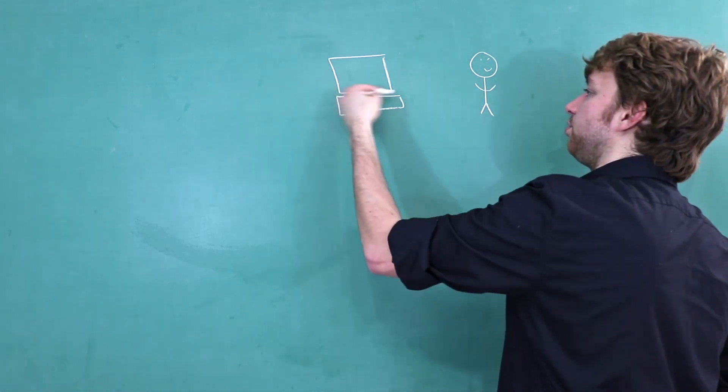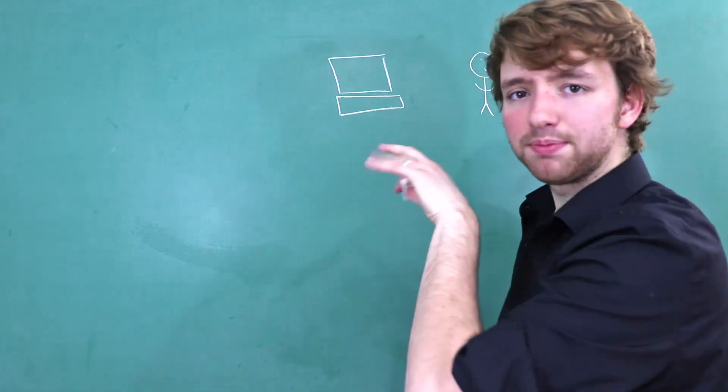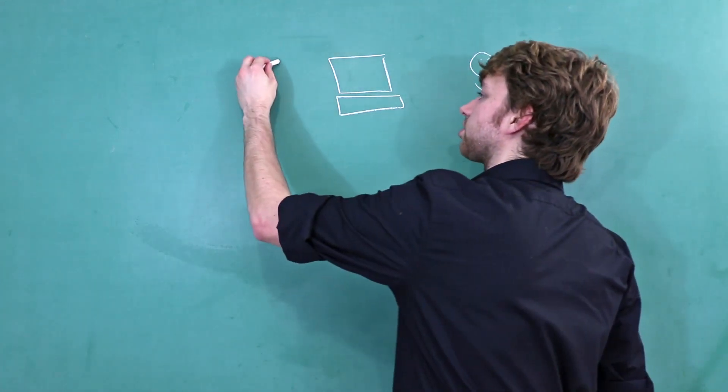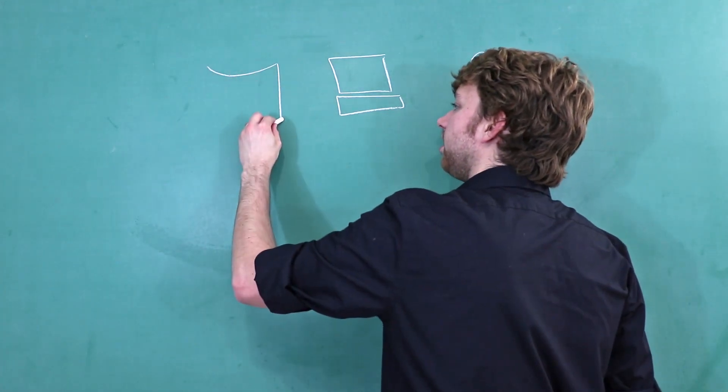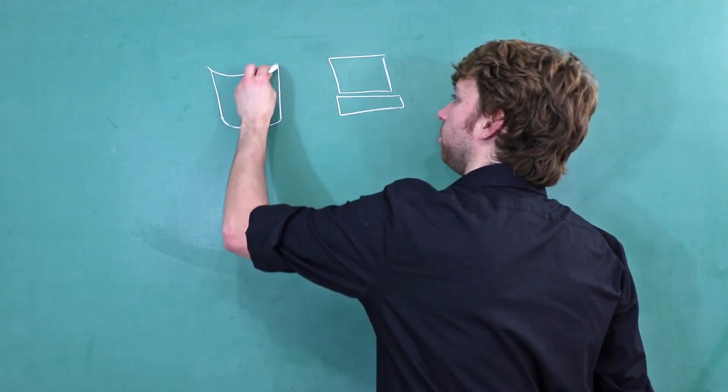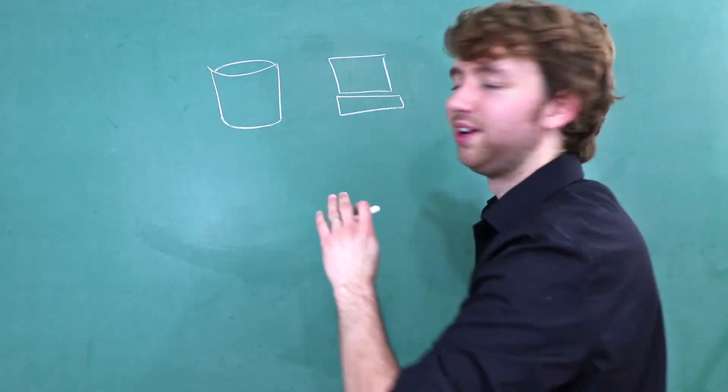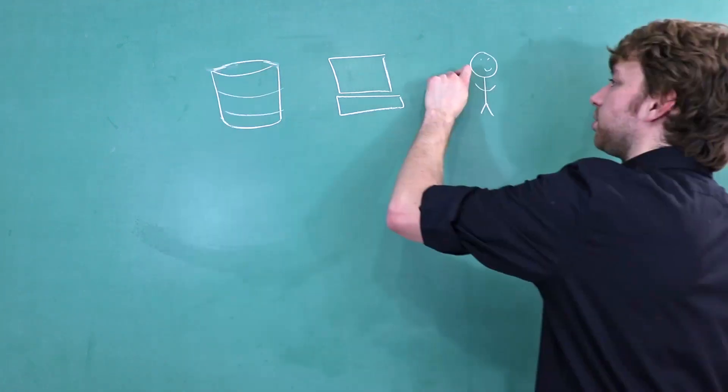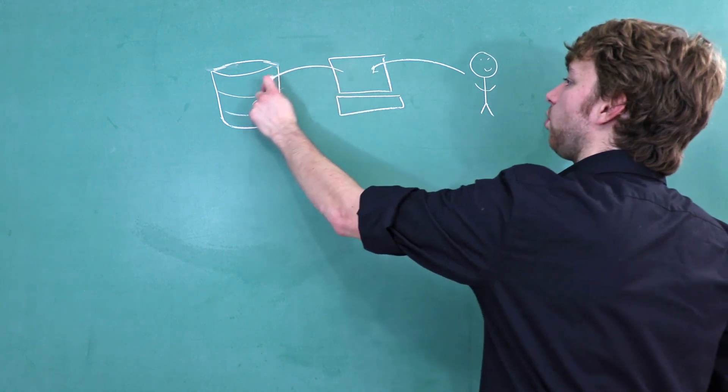So here is some user using an application and when he types information in there, it's going to get stored inside of a database. And this is kind of like the typical drawing for a database except way better. So he inputs info and that's stored in a database.